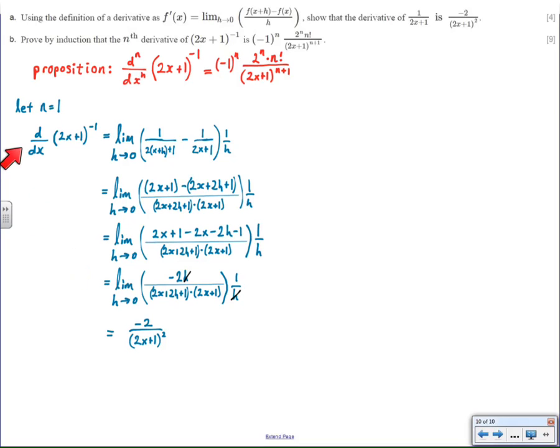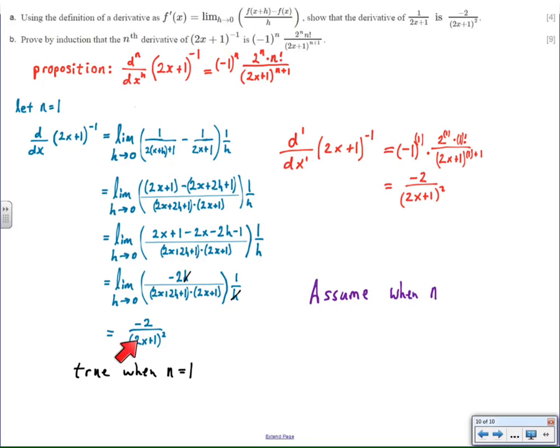You start with first principles, and then you go beyond that. So I use first principles to prove that the statement is true for n equals 1, but I have to make sure that the general form statement is actually valid. So I put in 1 for n in each of these places, and it produces a nice little negative 2 over 2x plus 1 squared, which is the same thing I got using first principles. So this formula or shortcut is in fact valid for n equals 1.